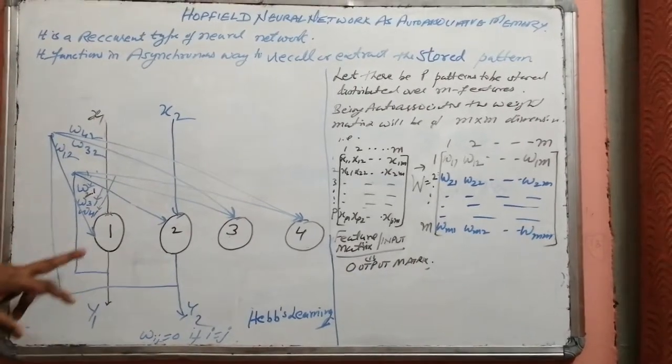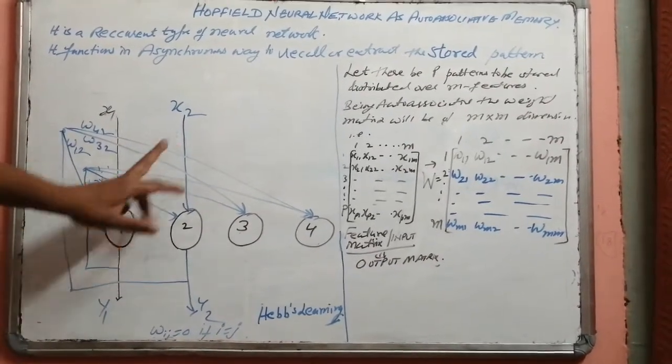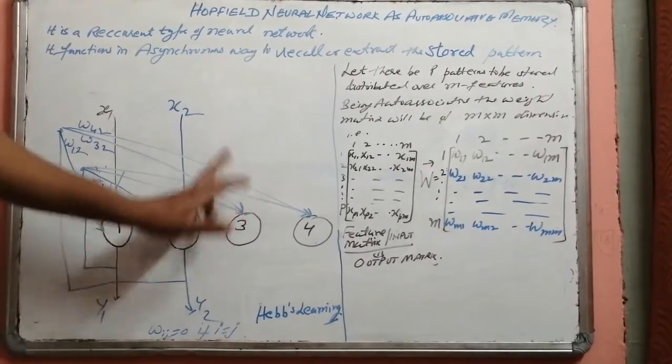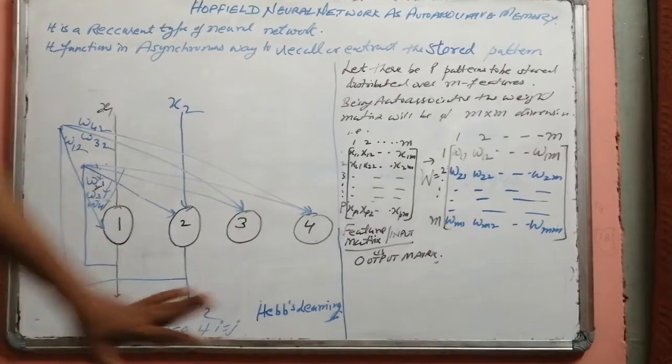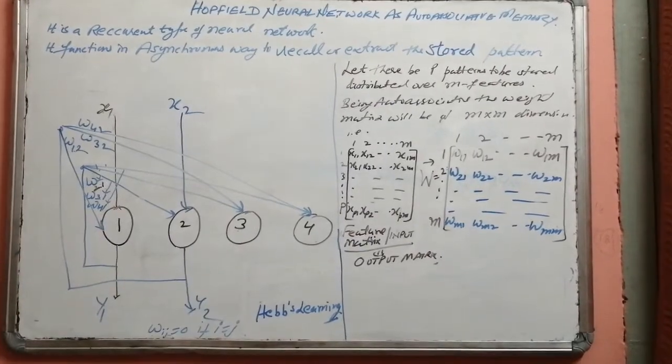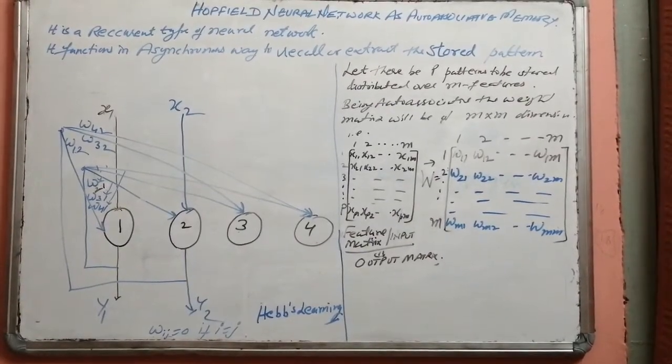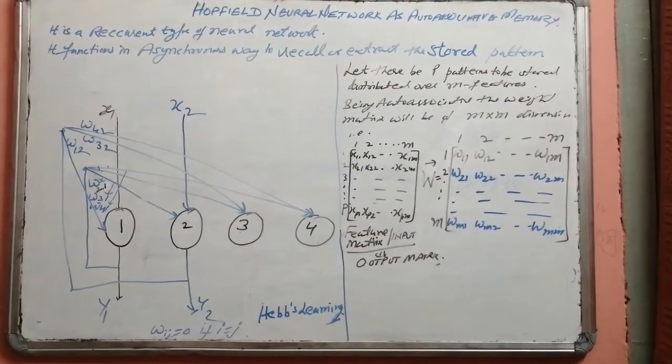One important thing to note: all W_ij where i equals j are set to zero. This means W11, W22, W33, and W44 will all become equal to zero — there are no self-connections in the Hopfield neural network.